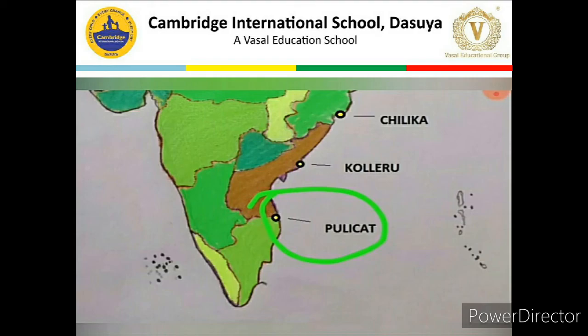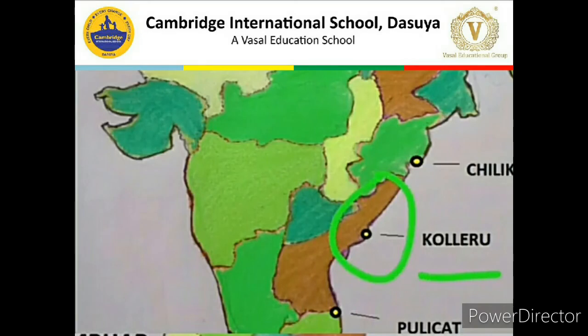Koleru lake is located in the state of Andhra Pradesh and forms the largest shallow freshwater lake in Asia. Koleru is located between the Krishna and Godavari deltas.